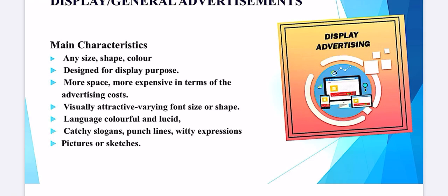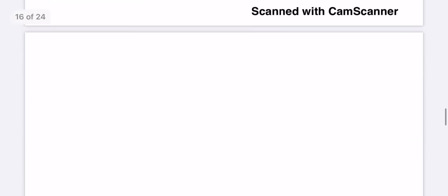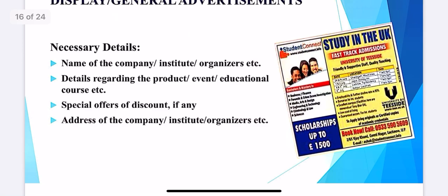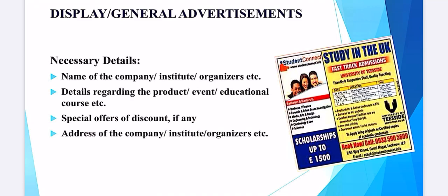These are all welcomed in display advertisement, and you can see lots of examples in newspapers and around you. Majority of advertisements you see for a gym, salon, or school are in display form. Necessary details include: name of the company, institute, or organizer; details regarding the product, event, or educational course; special offers or discounts if any; and address of the company or organizer. Copy this down by Friday, but first our focus will be on classified advertisement. Start writing display category from Thursday onwards, but finish classified first.